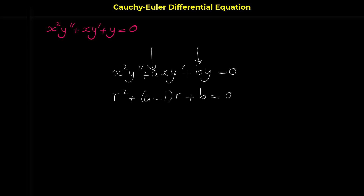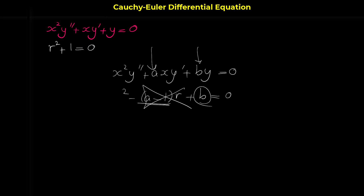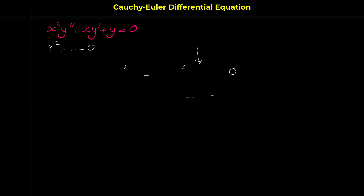So here in this example, the characteristic equation is r squared plus — a here is one, the coefficient of xy prime is one, one minus one is zero — so zero r, we don't need to write this, plus b. B is the coefficient of y which is one, so plus one equals zero. Now we have to solve this characteristic equation to find r, and then we can find the solutions of this Cauchy-Euler equation.